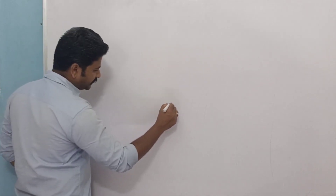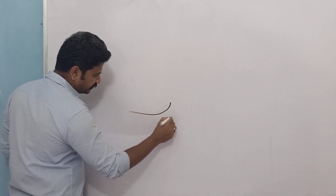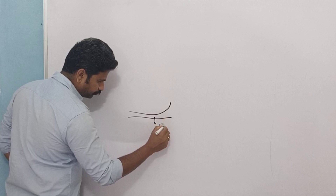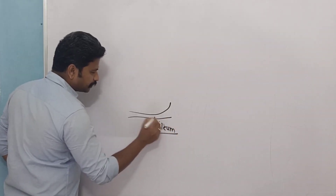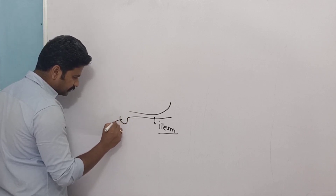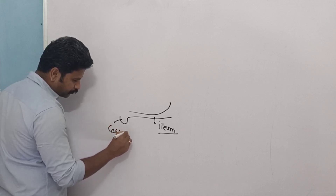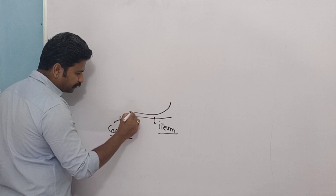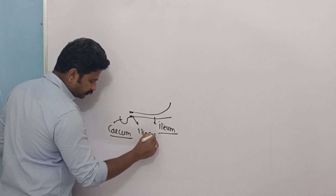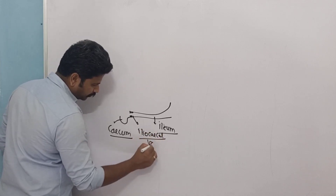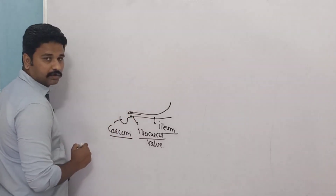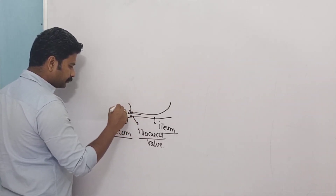Having completed the process of digestion and absorption in the small intestine, the last part of the small intestine is the ileum. The ileum will pass down its content to the first part of the large intestine, that is the cecum. To control this flow, there is a valve called the ileocecal valve. All material from the small intestine will slowly pass on into the large intestine.